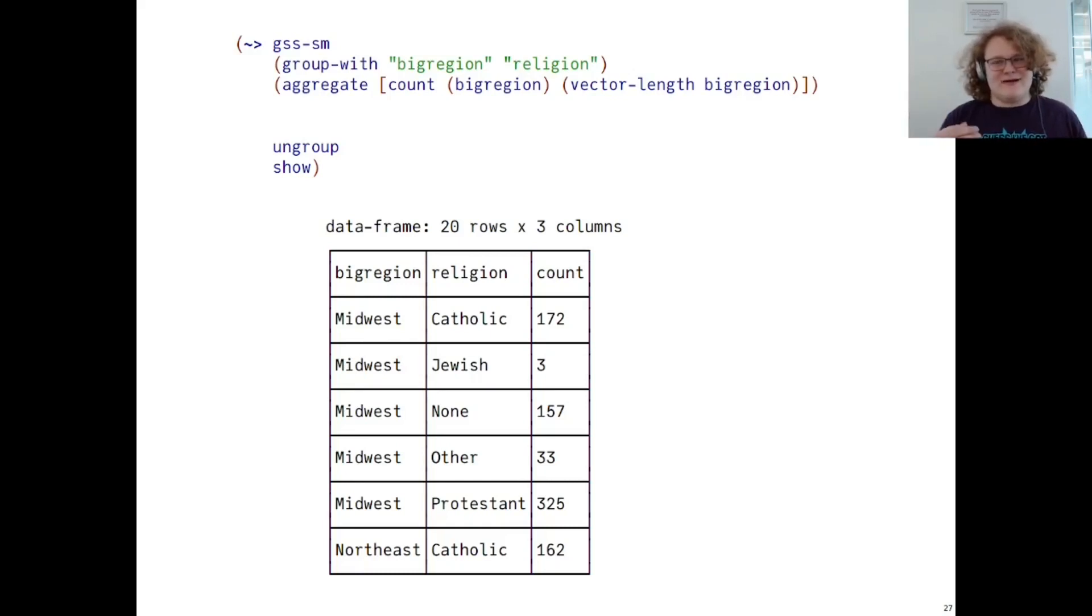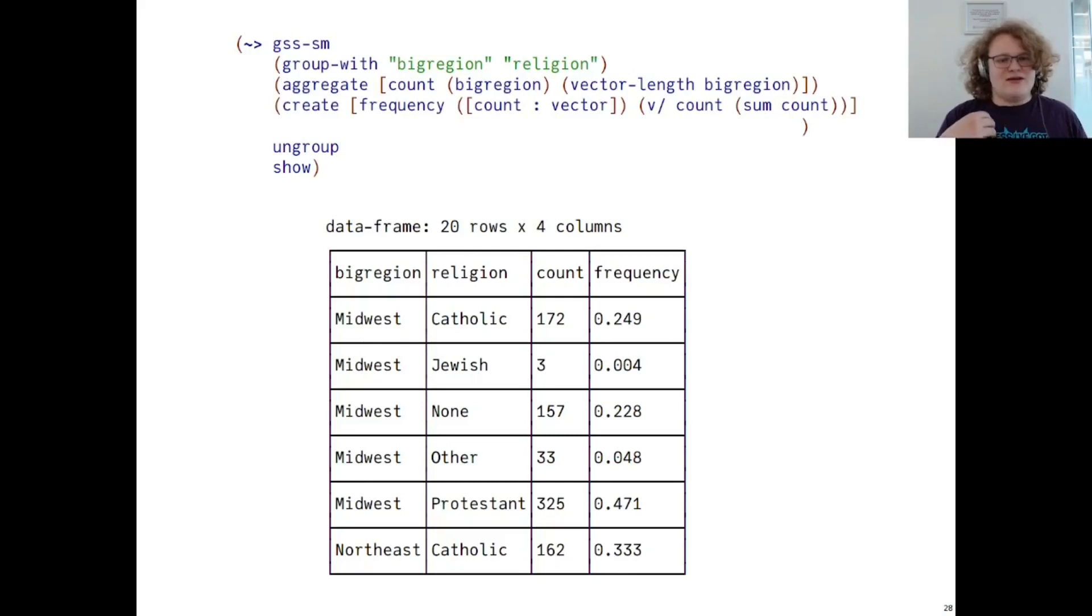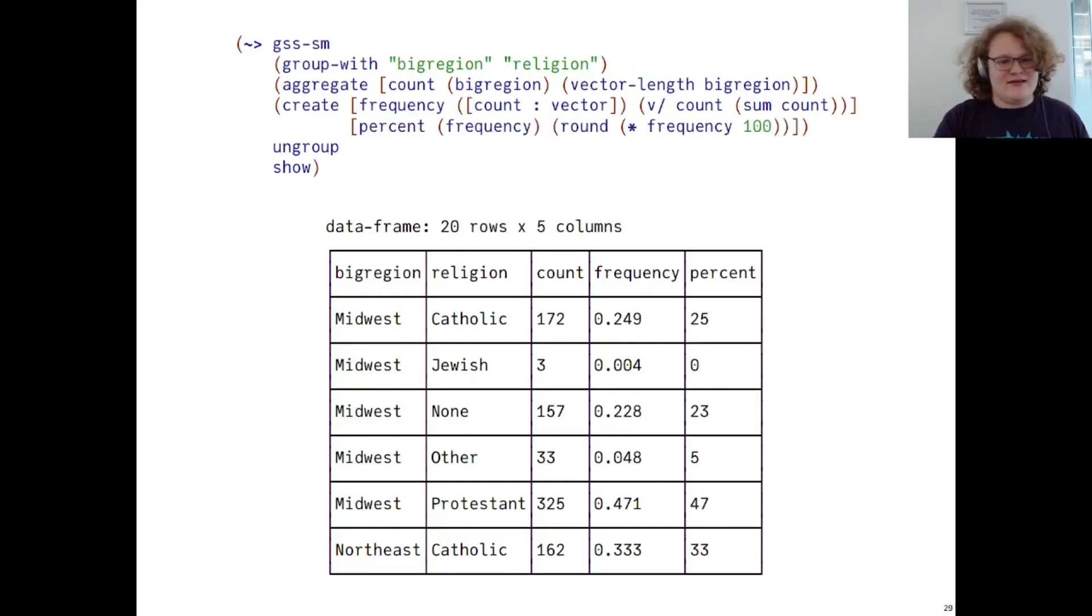This is decent, but we want to know percentages, not counts. To do this, we can use the create operator, which behaves like a combination of map and apply. Here, we create a new variable frequency that depends on the variable count. We bind the variable count as a vector, and we divide every variable count by the sum of that entire vector. This gives us the frequencies that we want, and then we want to map over that, converting that into percentages. So, we create a new variable percent that depends on frequency, binding it as a single number, and then mapping over that, multiplying everyone by 100, and then rounding it.